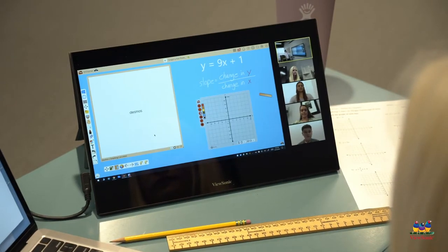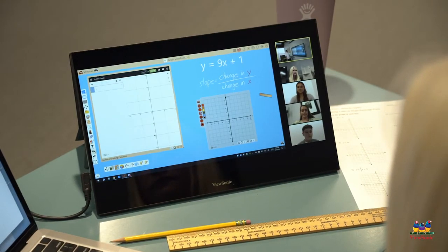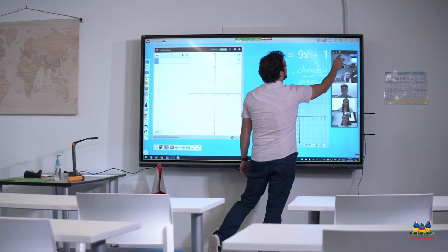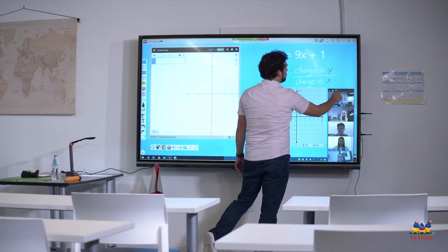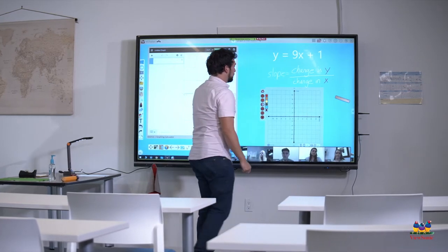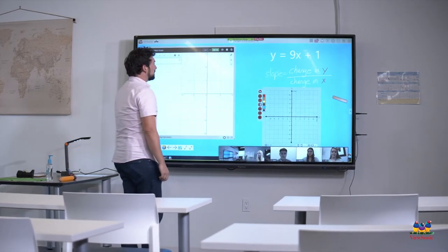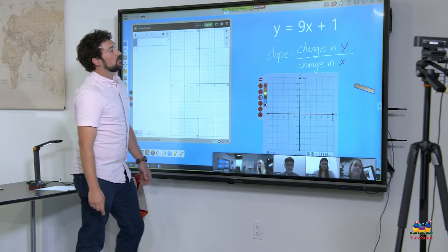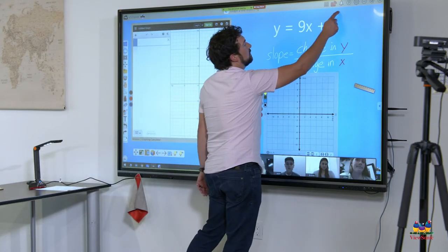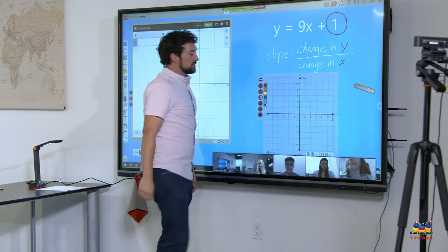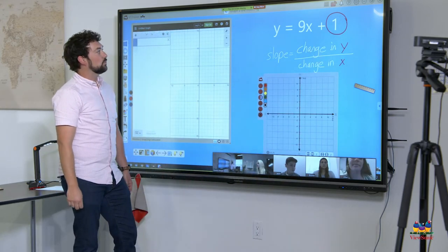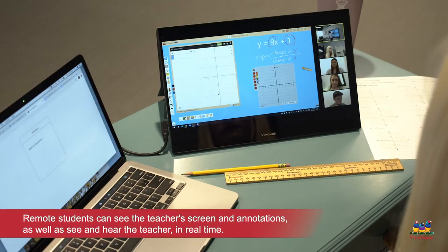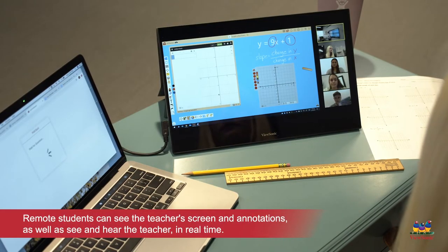All right, so we're going to be learning about slope-intercept today. If you remember, we talked the other day about how to graph using the formula y equals mx plus b. And so, if you remember, the y-intercept is always b. So, in this equation, the b is 1. And the m, which is the slope, is 9.